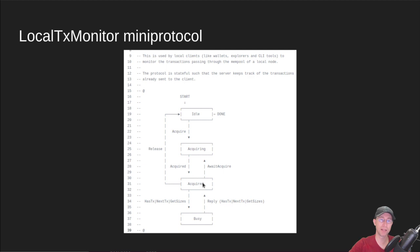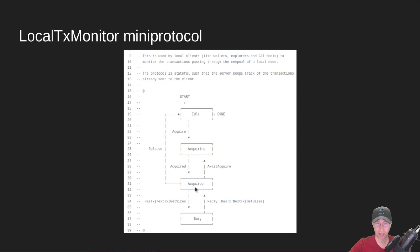The await acquire state is if we want to go back and acquire the latest mempool state, or we can just use the current snapshot of the mempool we already had. Most of the time you would stay in the acquired state until you're done with it. And then if you've got another transaction coming in, you'd go back to await acquire and then get back to acquired again. Once back in the acquired state, the client has agency and can send one of three messages.